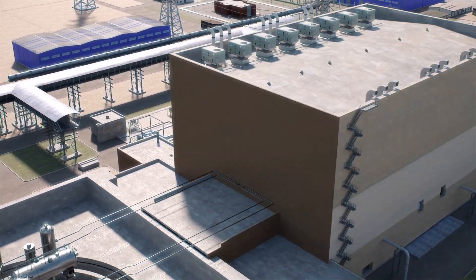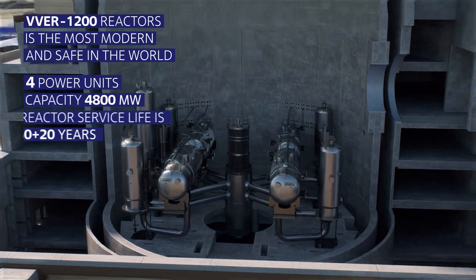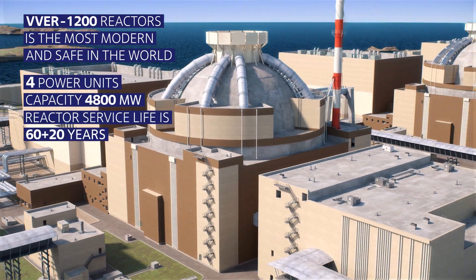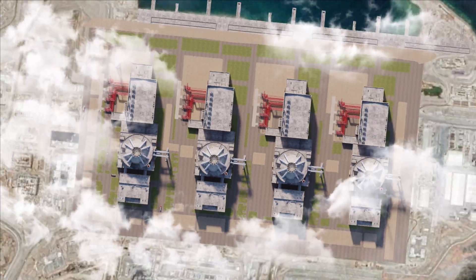Akkuyu is the most advanced and safe nuclear power plant in the world. The total capacity of the power units is 4800 megawatts. The service lifetime of the power units is 60 years, with an extension for another 20 years.